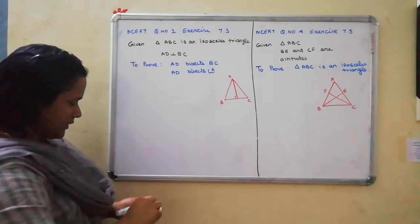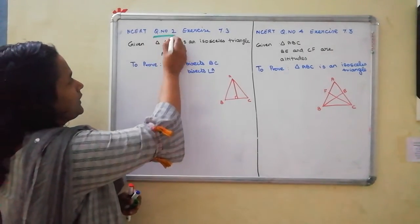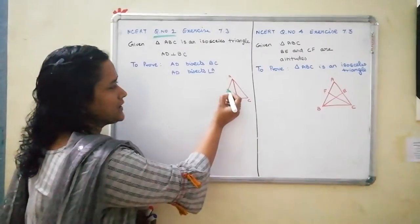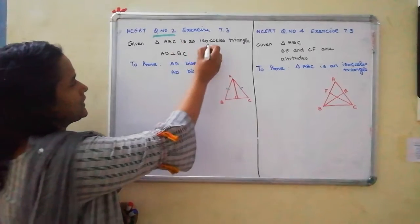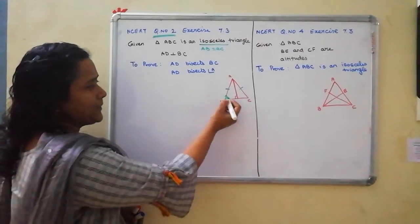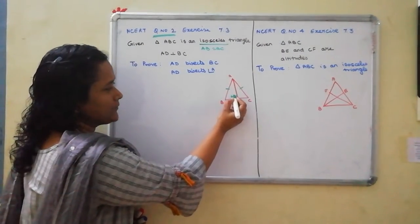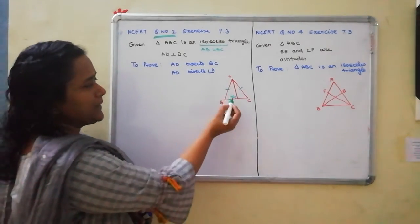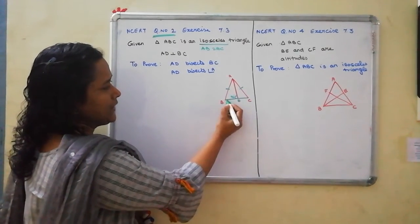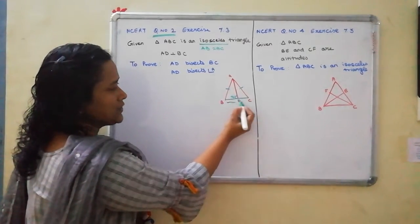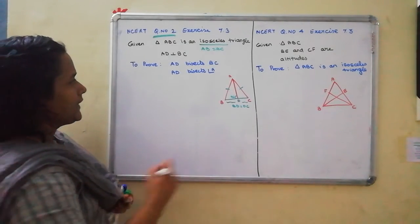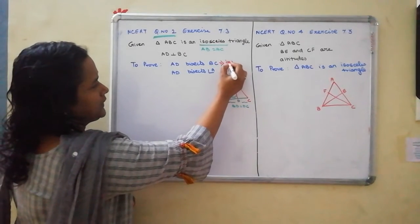In question number 2, triangle ABC is given. It is an isosceles triangle. What does isosceles triangle mean? The sides are equal — AB equal to AC is given. And then AD is perpendicular to BC, that means this is 90 degrees. These 2 are the given points. You have to prove that AD bisects BC, meaning BD equal to DC.